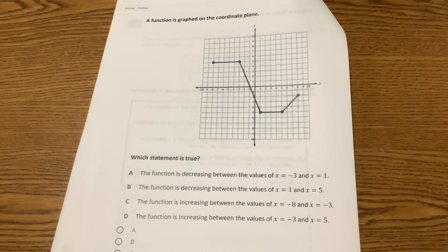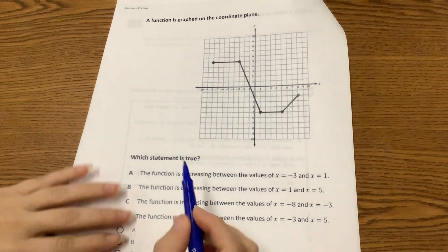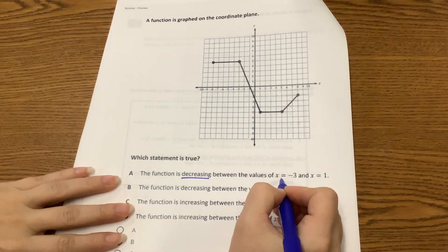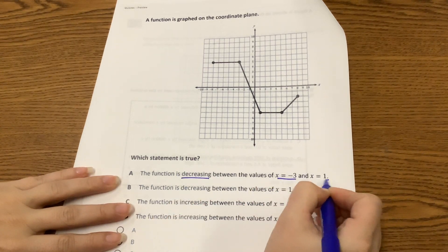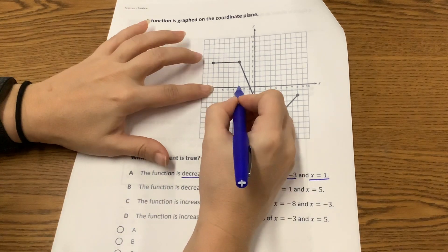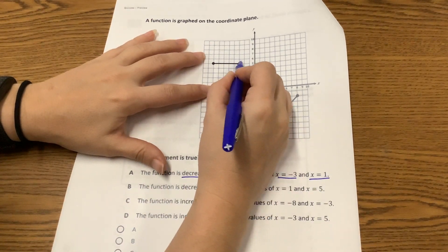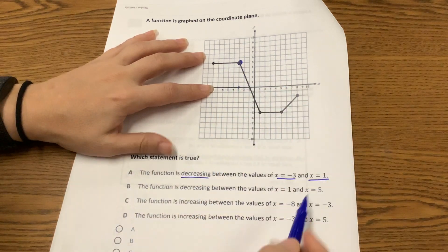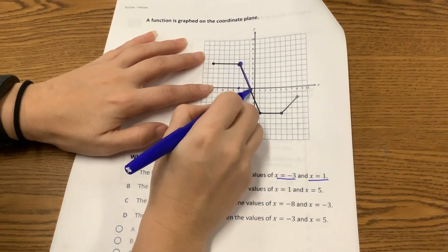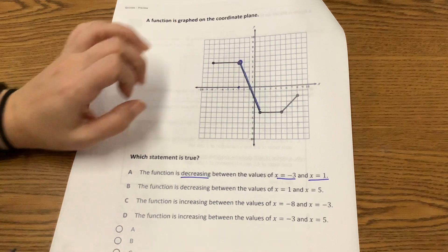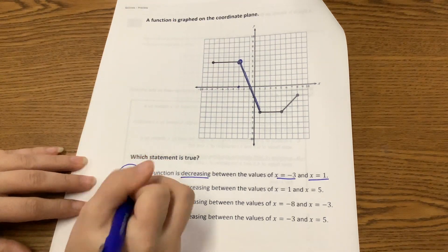You're just supposed to check each interval and see which one is true. This one says it's decreasing between where x is negative 3 and x is 1. X is negative 3 here, so it starts here on the graph, and to go to positive 1, it is just decreasing. So answer choice A is true.